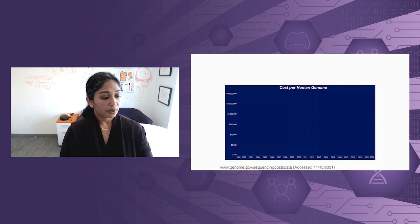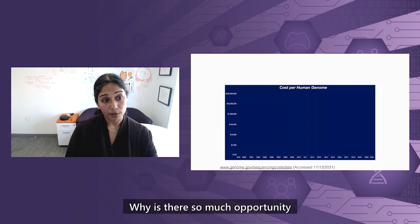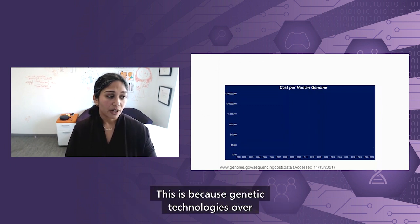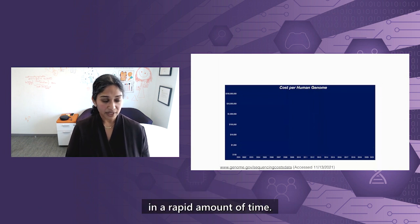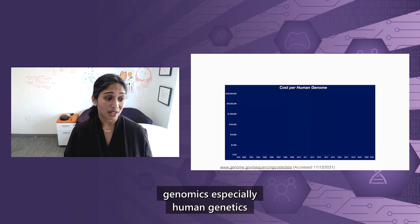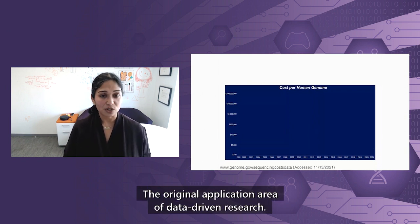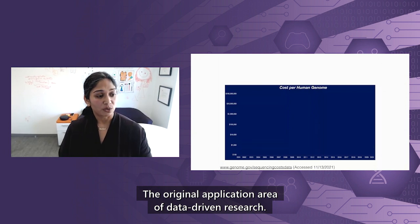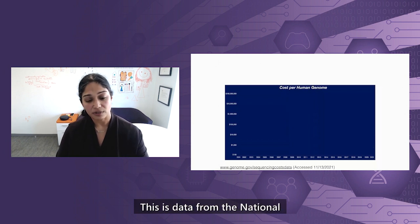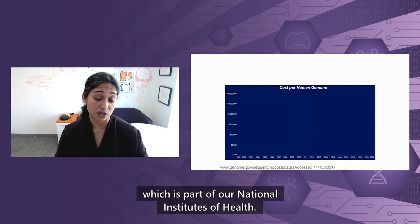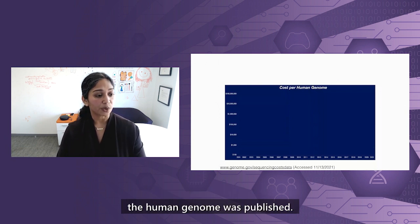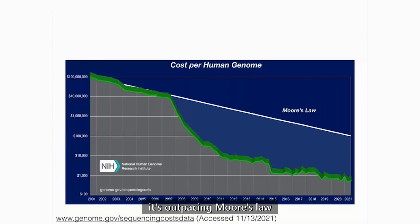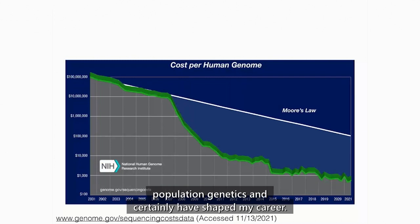Why is there so much opportunity for genetic data and race to intersect? Genetic technologies over time, especially in the last two decades, have led to incredibly large datasets in a rapid amount of time. This makes genomics, especially human genetics, the original field of data science — the original application area of data-driven research. This is data from the National Human Genome Research Institute showing the cost of sequencing a human genome over time since the draft sequence was published. The cost has plummeted and is outpacing Moore's law, really summarizing the forces that shaped the field of population genetics and my career.